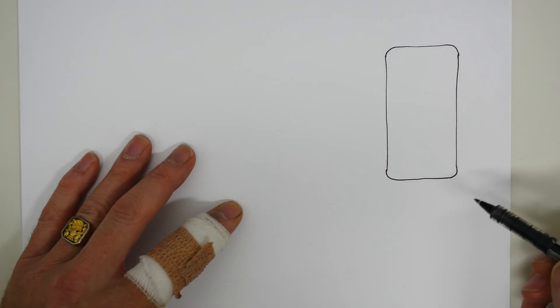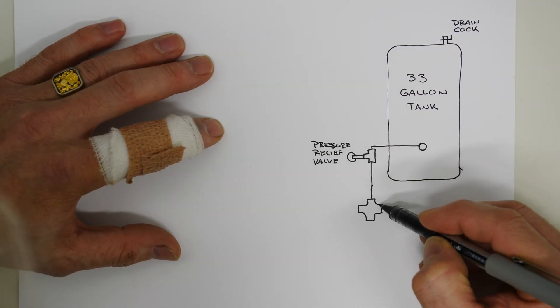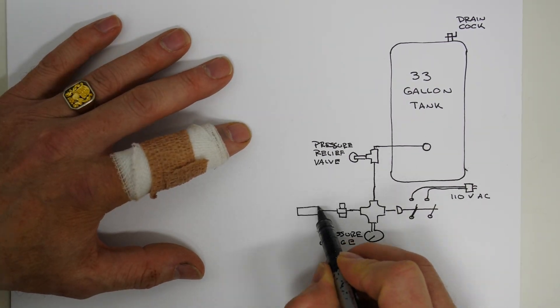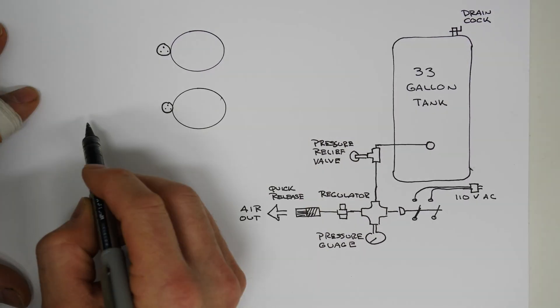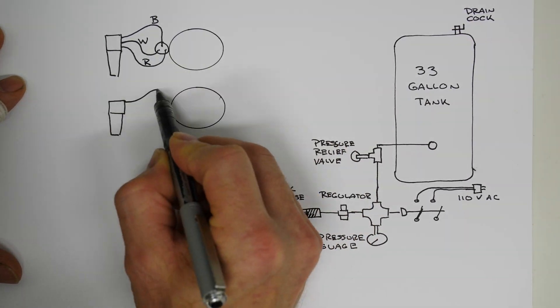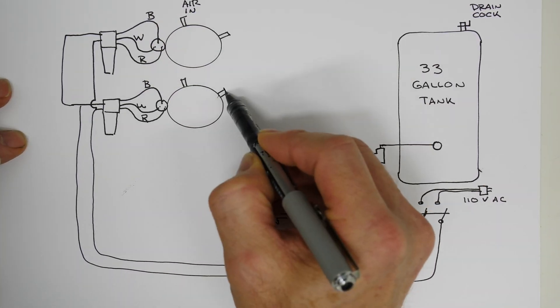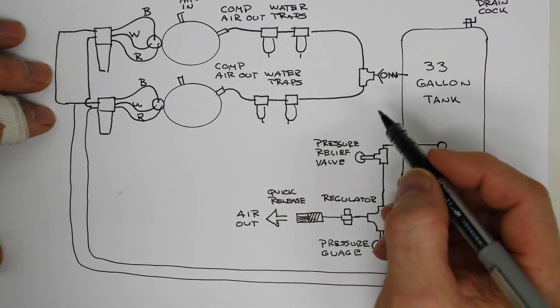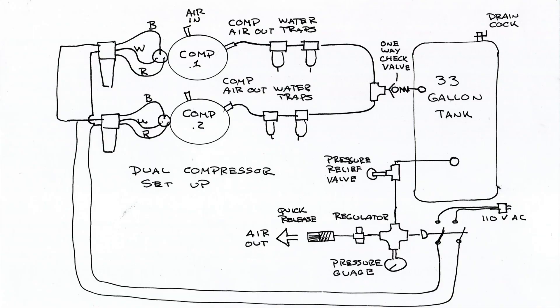Let's take a look at the schematic. Here we have the 33 gallon air tank at the bottom. First is a pressure relief valve and then on the right here we have the pressure switch. On the left is the pressure gauge where the air would come out and go into the pressure tanks. Here are the solid state relays getting hooked up to the compressors and those get hooked up to the pressure switch over there. We have our water traps and then everything goes through the one-way check valve back into the 33 gallon tank to fill it up.